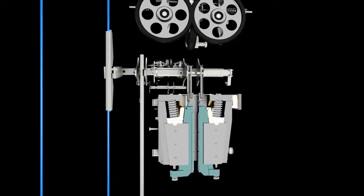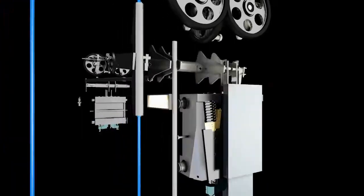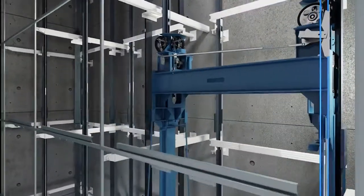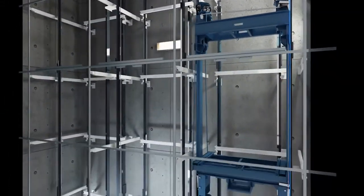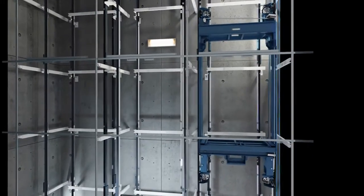These safety gear devices can be located at the bottom, top, or at all four corners of the car frame, depending on the elevator's load and speed.